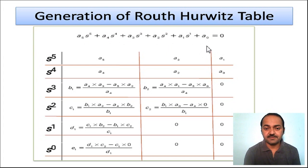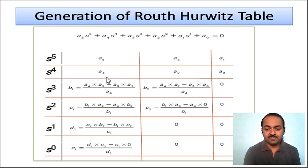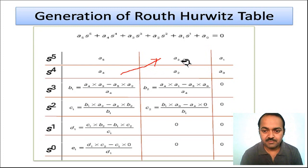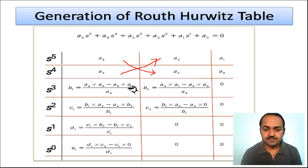The Routh-Hurwitz table is constructed as follows: for a polynomial with terms up to s^5, we write the coefficients a5, a4, a3, a2, a1, a0 in the first two rows. The subsequent row coefficients, such as b1, are obtained by cross multiplication — for example, b1 equals (a4 times a3 minus a5 times a2) divided by a4.